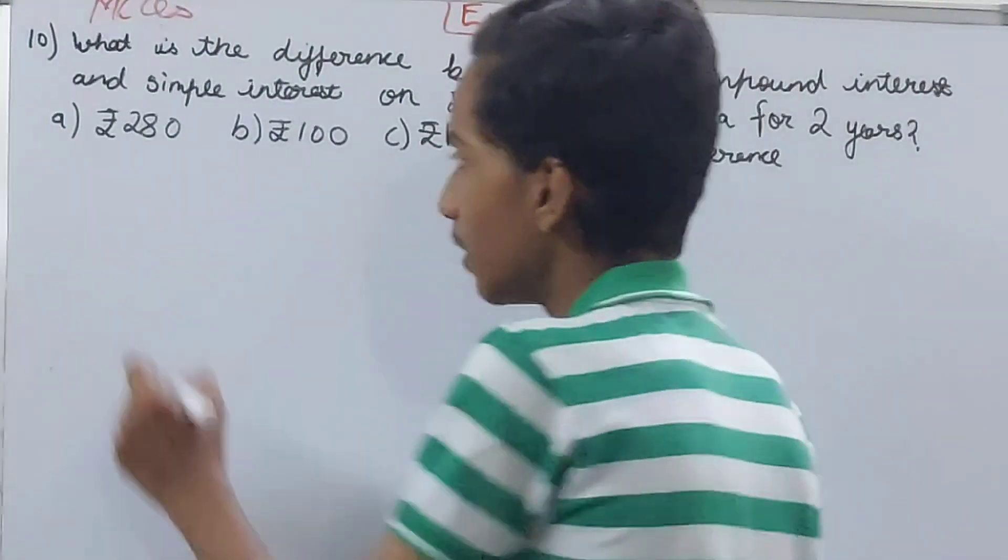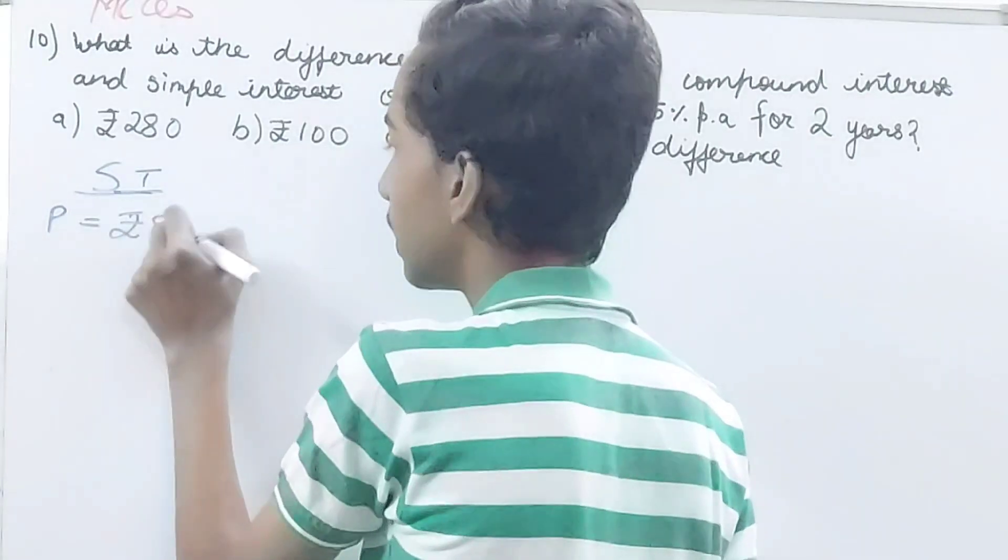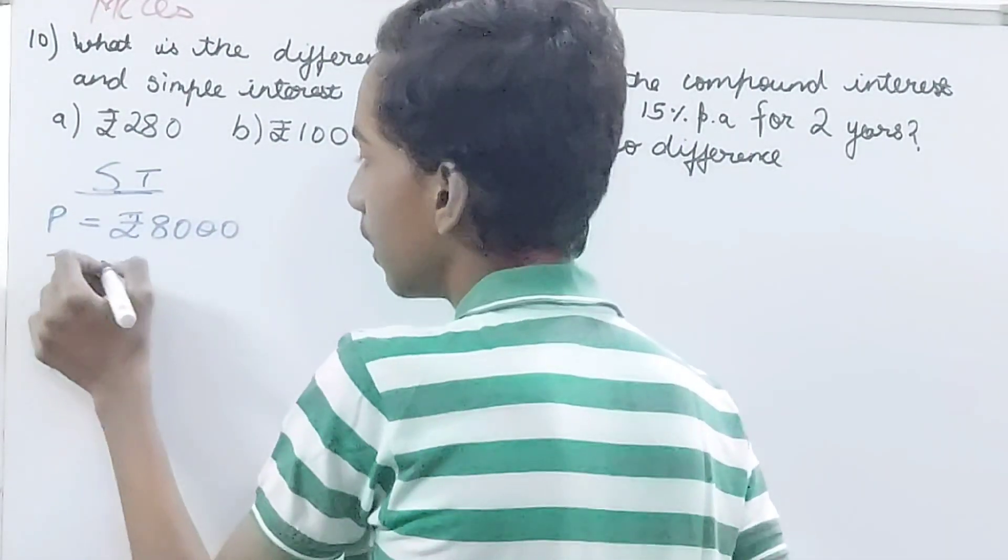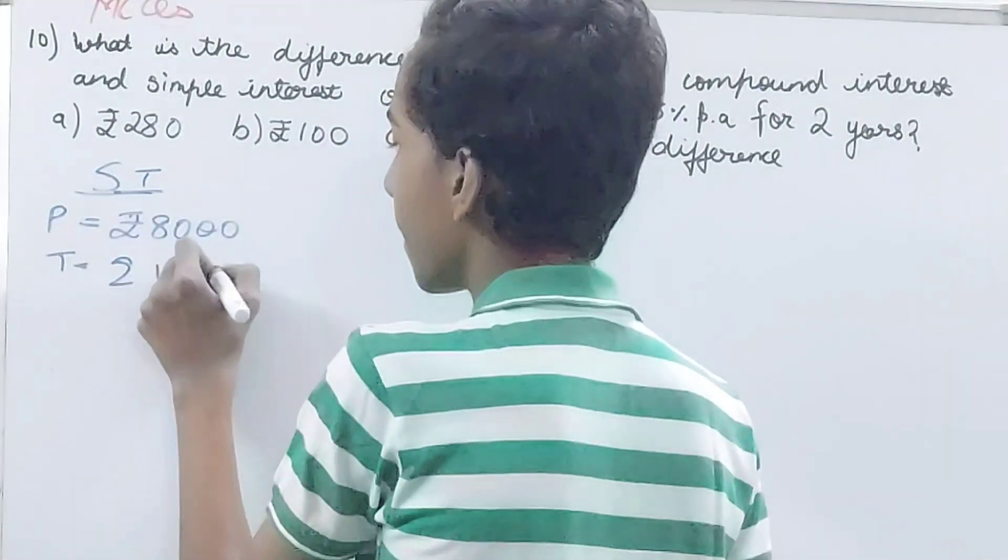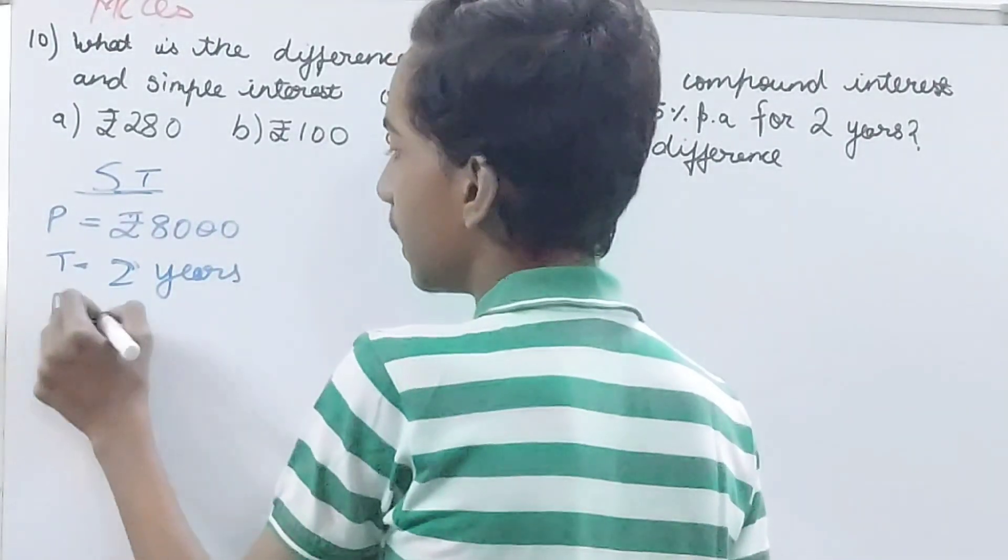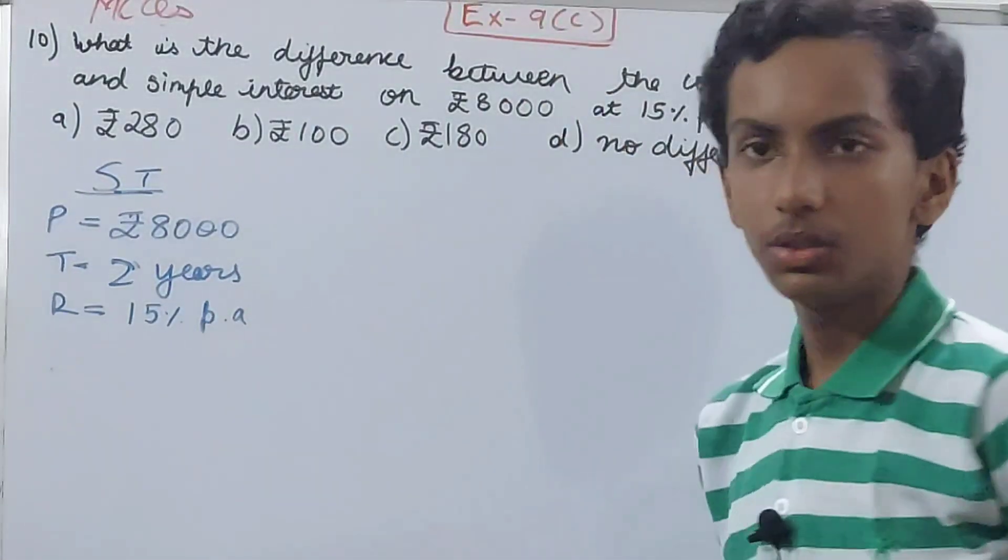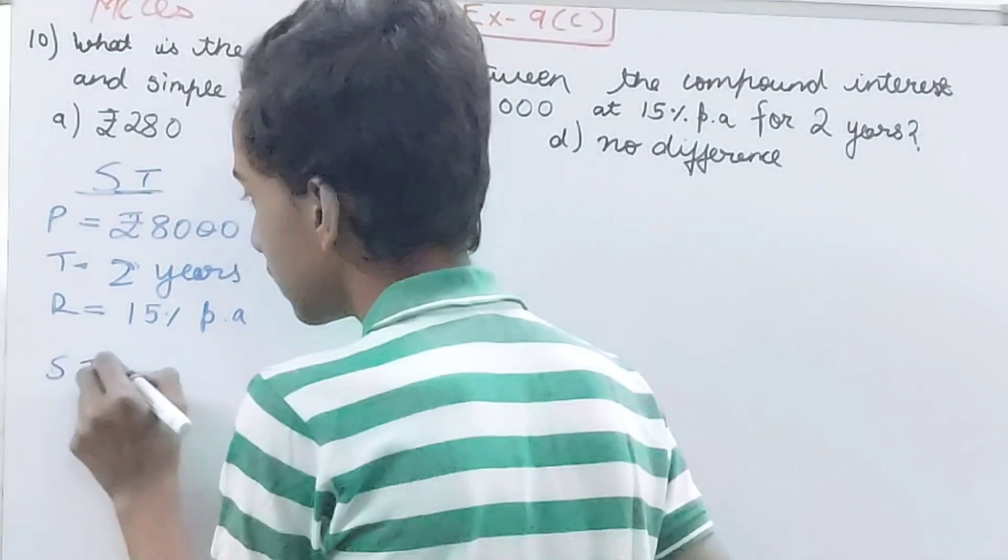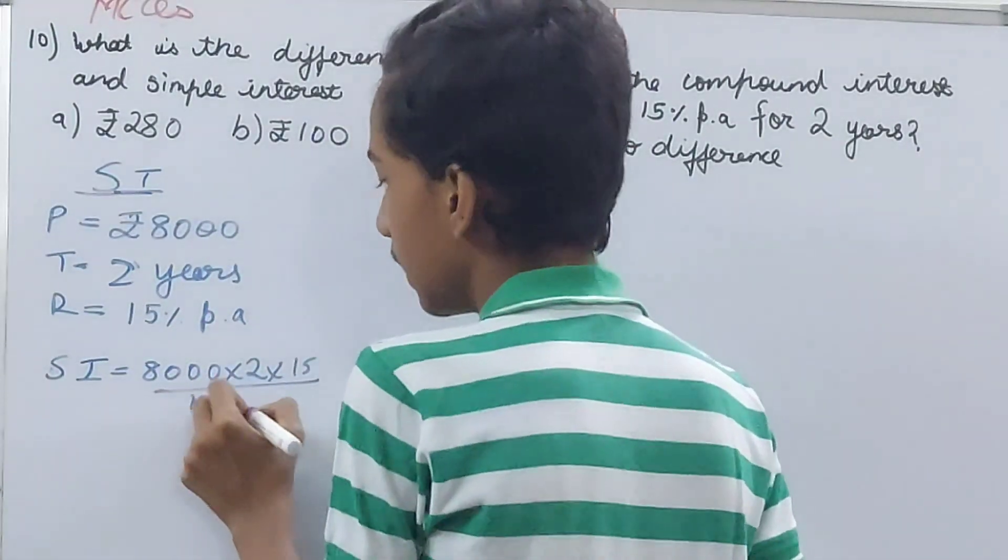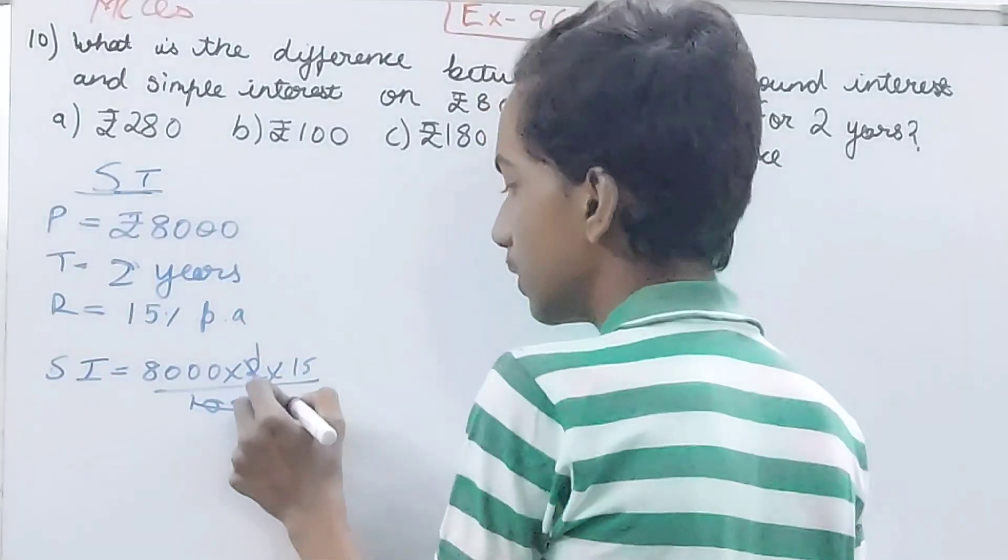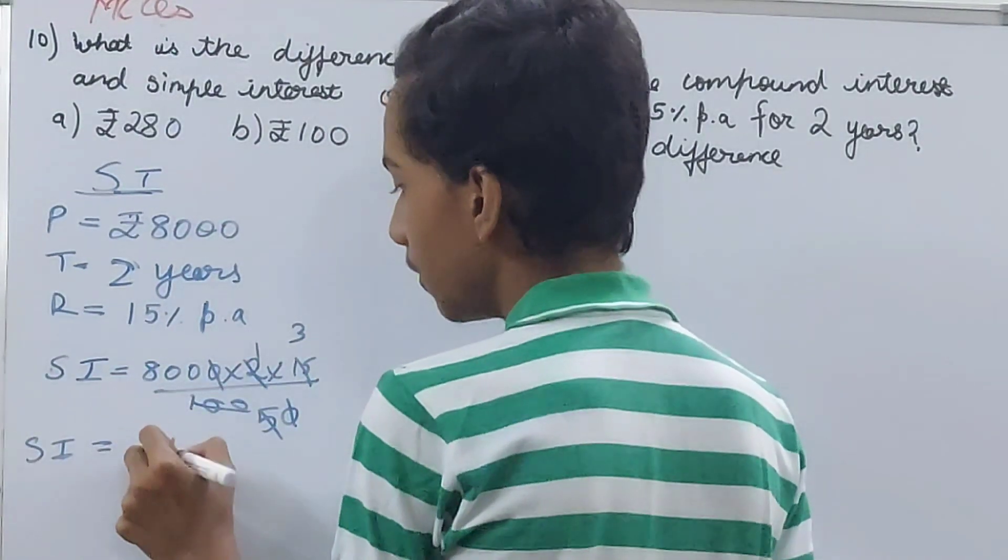First I'll calculate simple interest. The principle is rupees 8000, time is 2 years, and rate is 15 percent per annum. So simple interest equals 8000 into 2 into 15 by 100. I'll cancel this - you have SI as 8 into 3 into 24, so rupees 2400 is your simple interest.